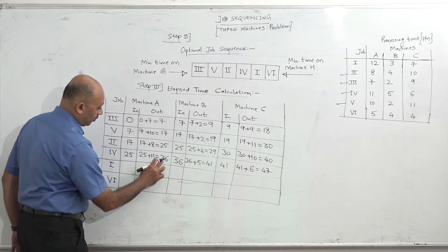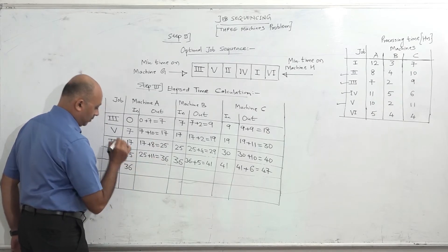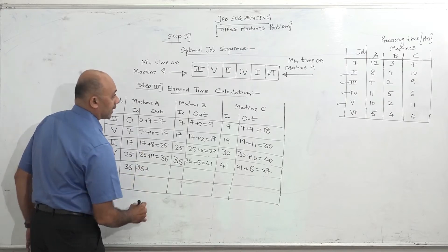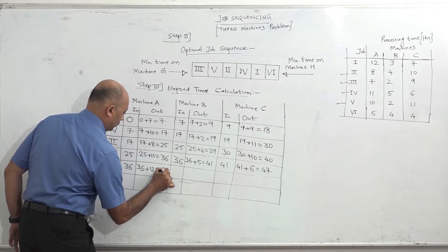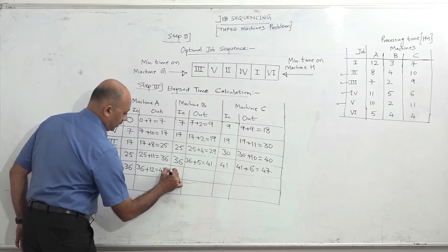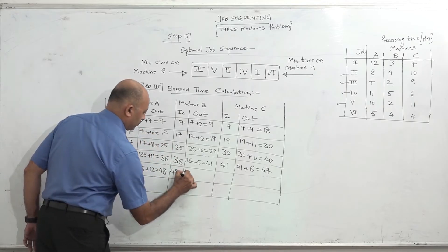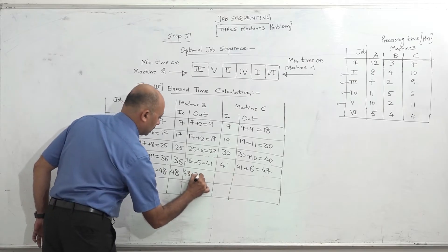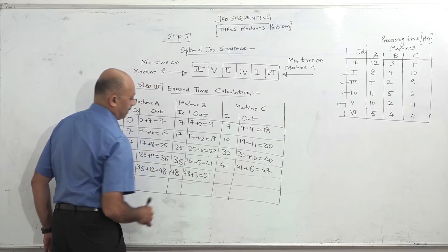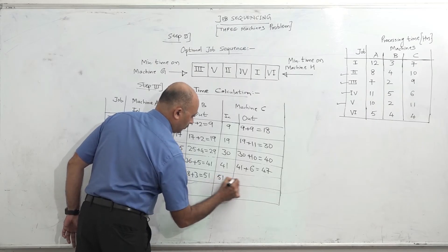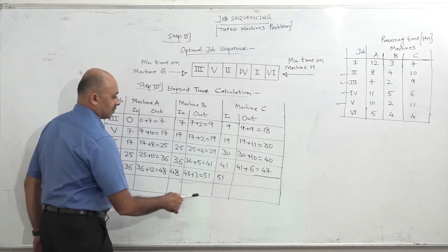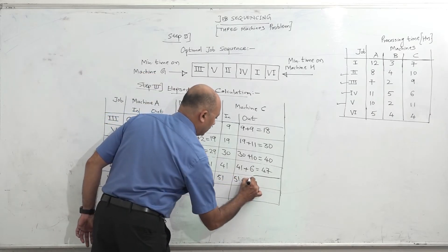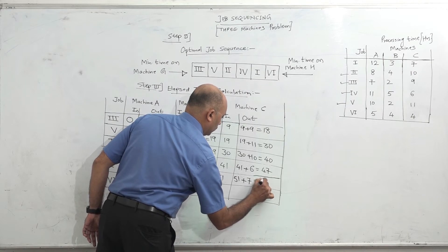Job 1: machine A in-time is 36. Time on A is 12, so 36 plus 12 = 48. In-time on B is maximum of 48 and 41 = 48. Time on B is 3, so 48 plus 3 = 51. In-time on C is 51. Time on C is 7, so 51 plus 7 = 58. Job 1 is done.